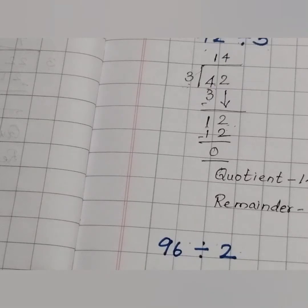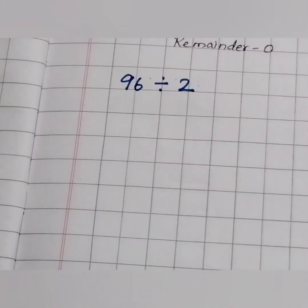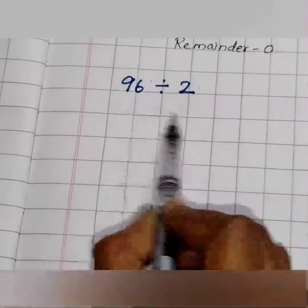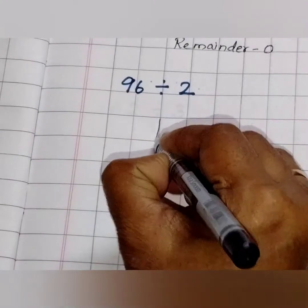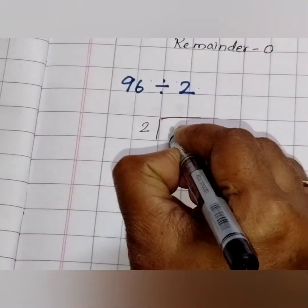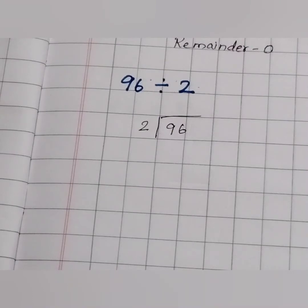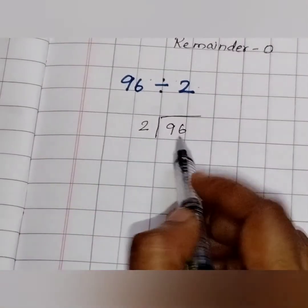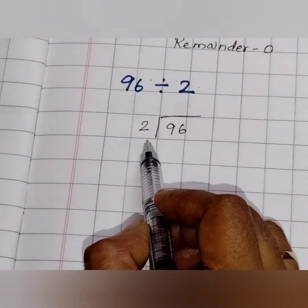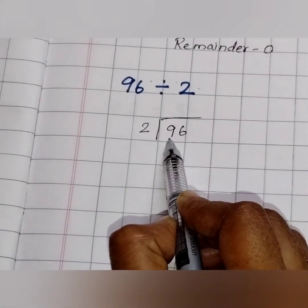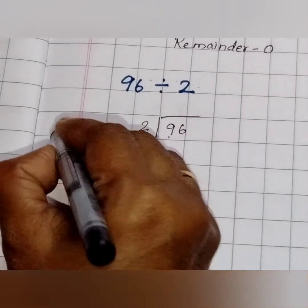Coming to the next question. It is 96 divided by 2. Now we are going to write the divisor and dividend. Okay, it is over. Now what to do? We have to take the first digit. As 2 is smaller than 9, we can divide it separately.